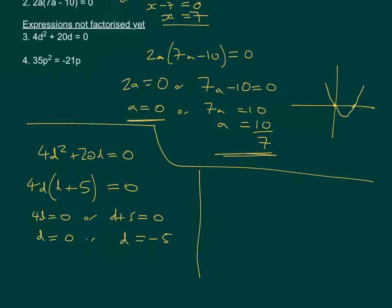Moving on to the last one, we have 35p squared equals minus 21p. Now, when you haven't got the equation equal to 0, such as here, you need to rearrange it so that it is equal to 0, because that's how you solve these quadratics. So for this one, I'm going to add 21p to both sides, which will make this side 0. So we'll have 35p squared plus 21p, and that equals 0.